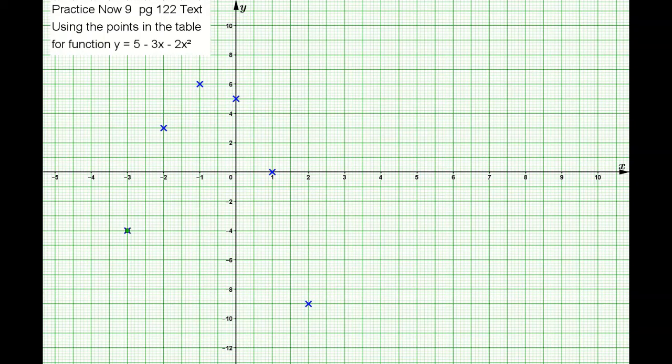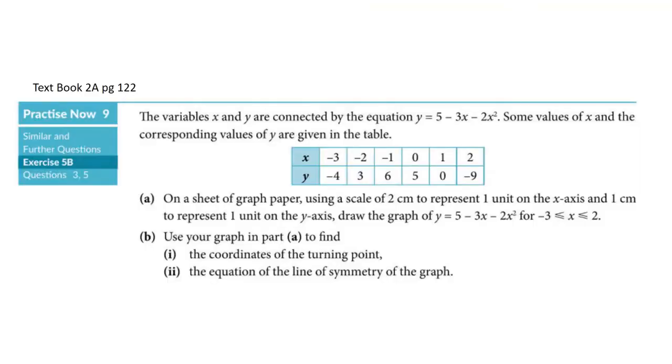In this video I'm going to go through with you Practice Now number nine, page 122 of the text. The variables x and y are connected by the equation y equals 5 minus 3x minus 2x squared. The table of values has already been given to you from x equals negative 3 until 2. On the sheet of graph paper, you have to use a scale of 2 cm to 1 unit on the x-axis and 1 cm to represent 1 unit on the y-axis, then draw the graph.